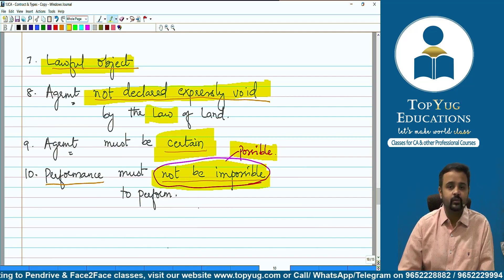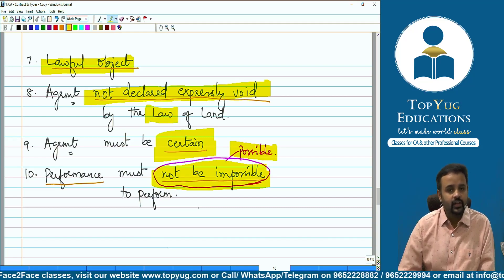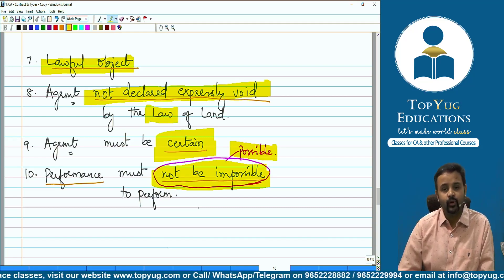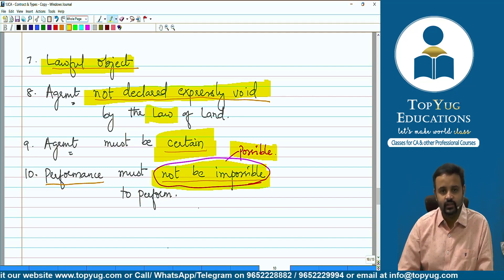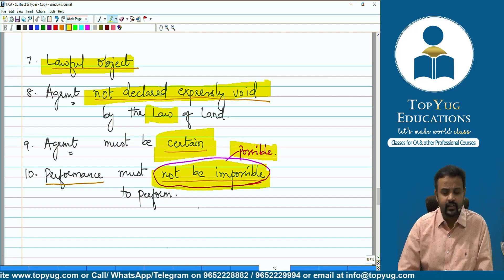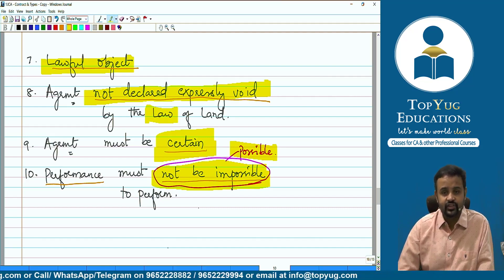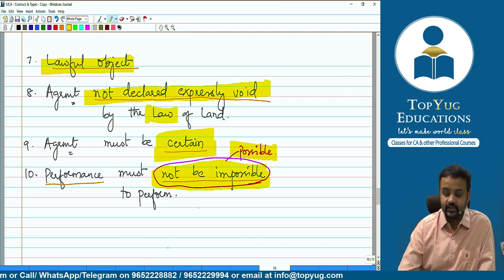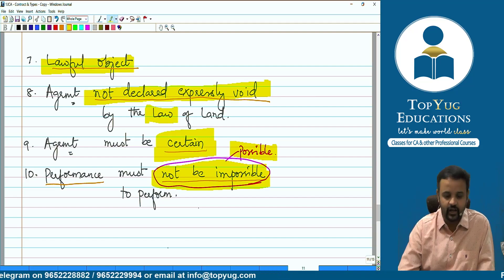The agreement must have certainty — there should not be vagueness. Performance should not be impossible; performance should be possible. That is how we discussed the essential elements under Section 10 — the essential elements for a valid contract, or the conditions of enforceability. Then, coming to kinds of contracts, there are various bases: enforceability or legal validity, formation or mode of creation, and performance.